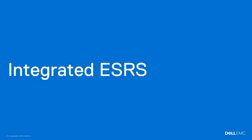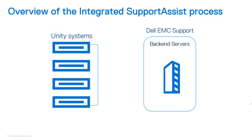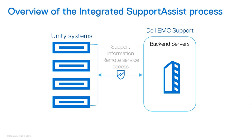Integrated ESRS creates a direct, secure connection between the Unity system and Dell EMC support servers. With integrated ESRS, you can set up a one-way communication to Dell EMC support from your Unity system, or a two-way communication between the Unity system and Dell EMC support. One-way communication enables call-home functionalities on your Unity system. Two-way communication allows information to be sent from your system to the Dell servers, and also allows Dell EMC support to access your system to service it remotely. This functionality is the same as that provided through a centralized ESRS Virtual Edition gateway server.